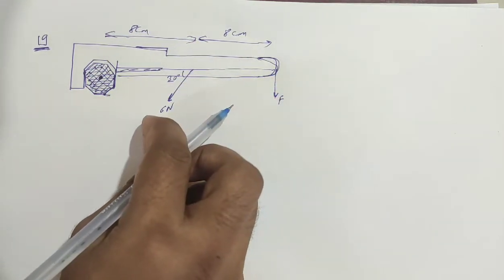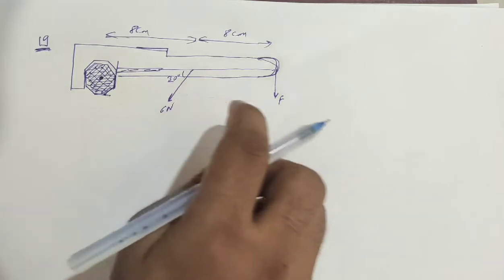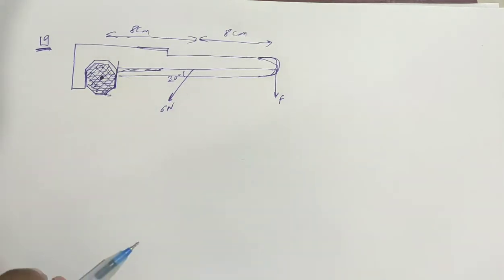So the torque of 6 Newton force at 8 cm at 30 degree, and the torque of F force. Then it opens, so there is 6 Newton torque.